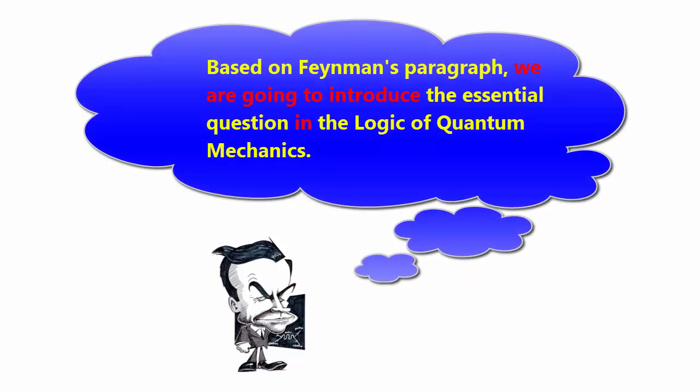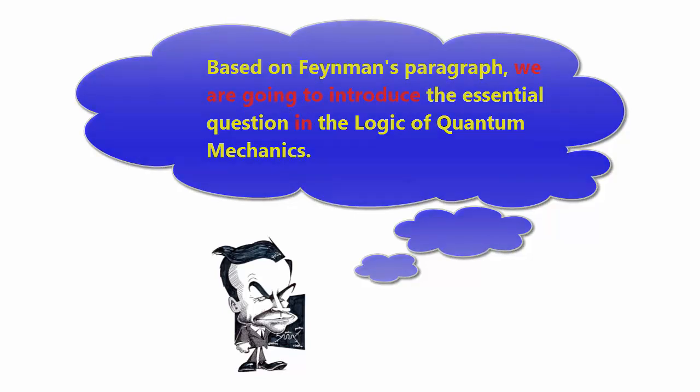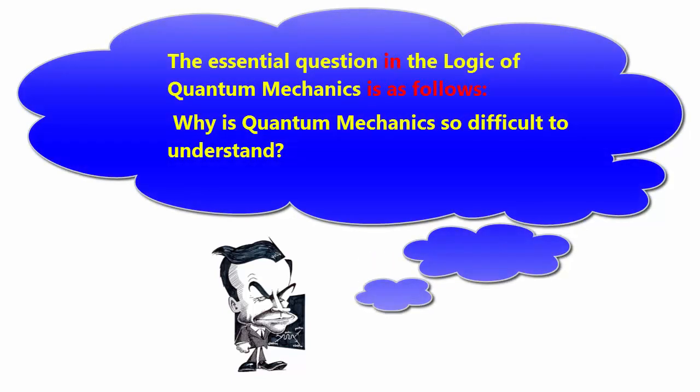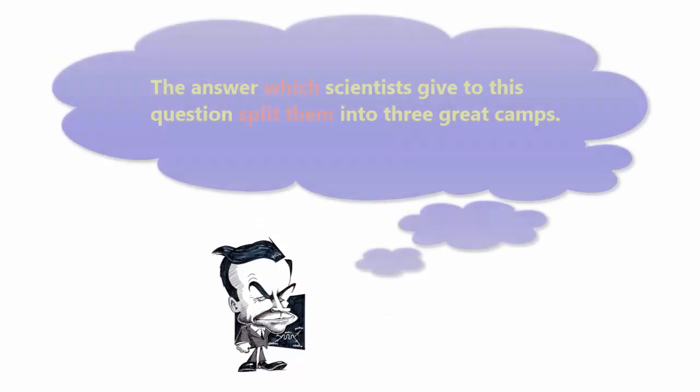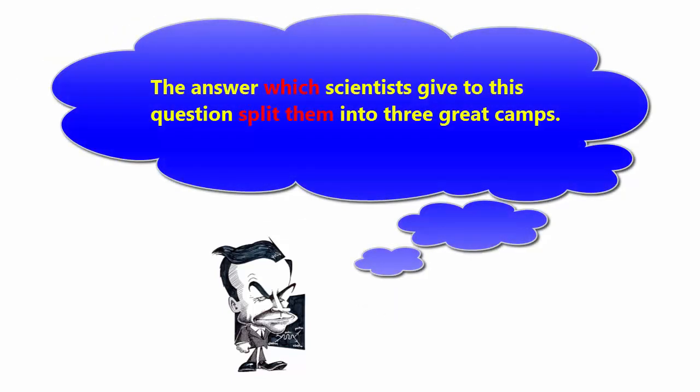We are going to introduce the essential question in the logic of quantum mechanics. The essential question is as follows: Why is quantum mechanics so difficult to understand? The answer which scientists give to this question split them into three great camps.